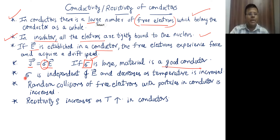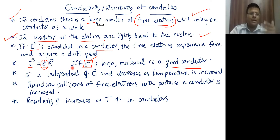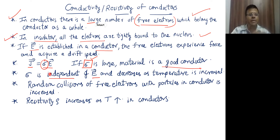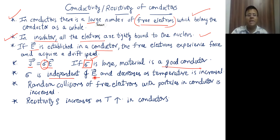One very important point: in this chapter many theoretical questions are asked, and if your theory is not clear you will not be able to select the correct option. Conductivity is not dependent on the electric field. Just because we have the relation J equals sigma E, many students think sigma depends on electric field mathematically. But conductivity is not dependent on the electric field.